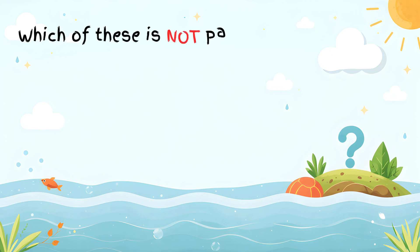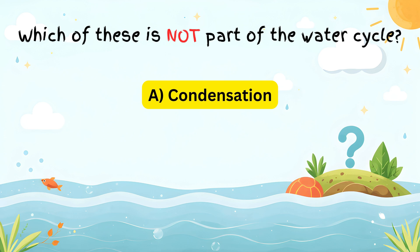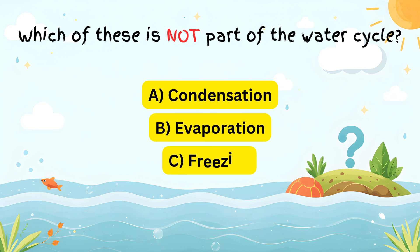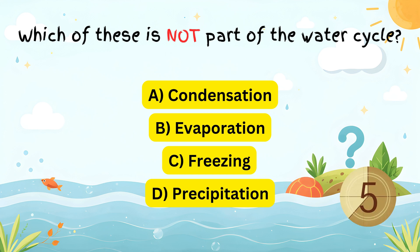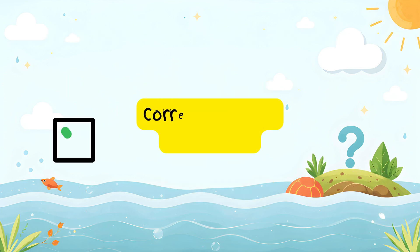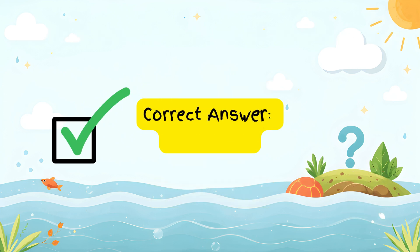Which of these is not part of the water cycle? A) Condensation. B) Evaporation. C) Freezing. D) Precipitation. Correct answer: C, freezing.